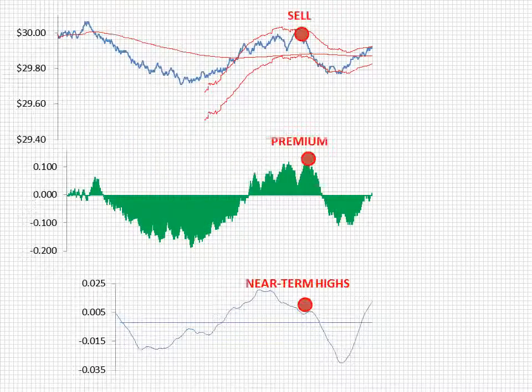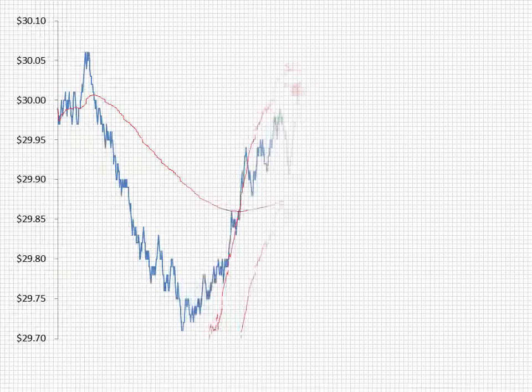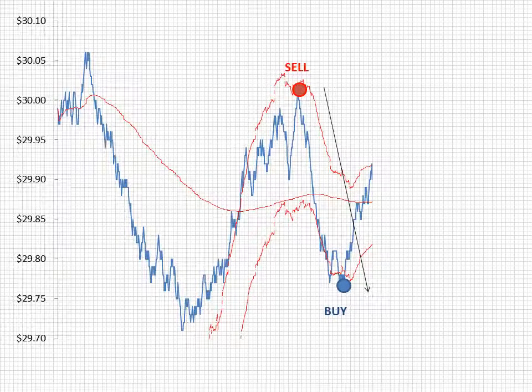Here's the same data set through mid-afternoon. Our second order is generated when the market price trades above the VWAP and the VWAP forecast and at a premium to the VWAP and at the near-term highs. We cover those short positions when the market price trades below the VWAP, trading at a discount to the VWAP and at the near-term lows. The net result of this second trade is capturing 28 basis points in locked alpha.